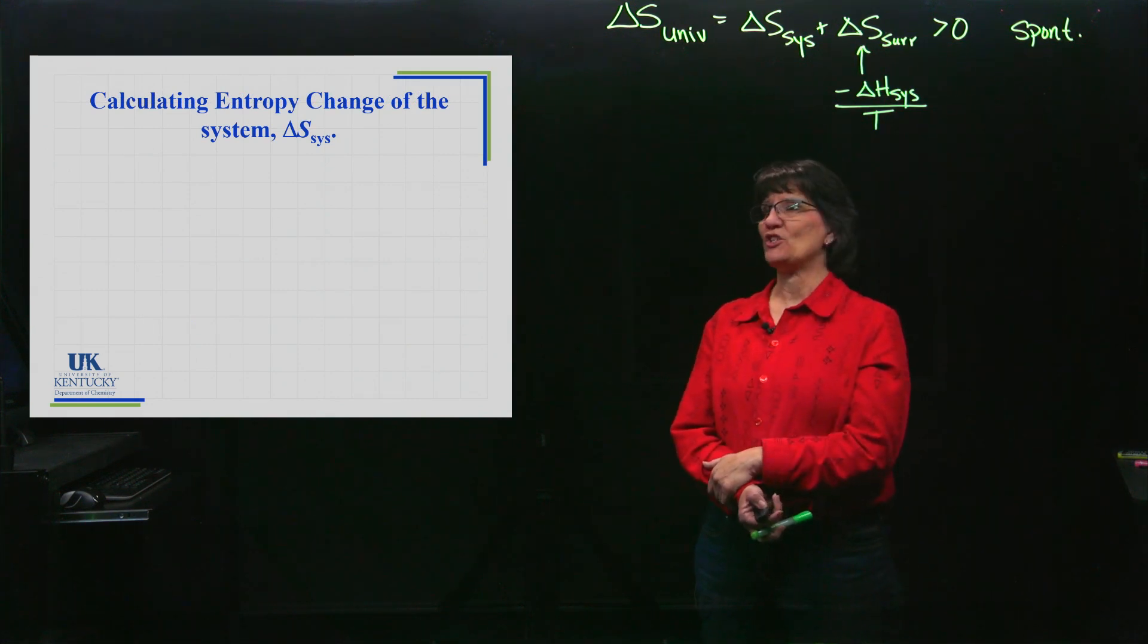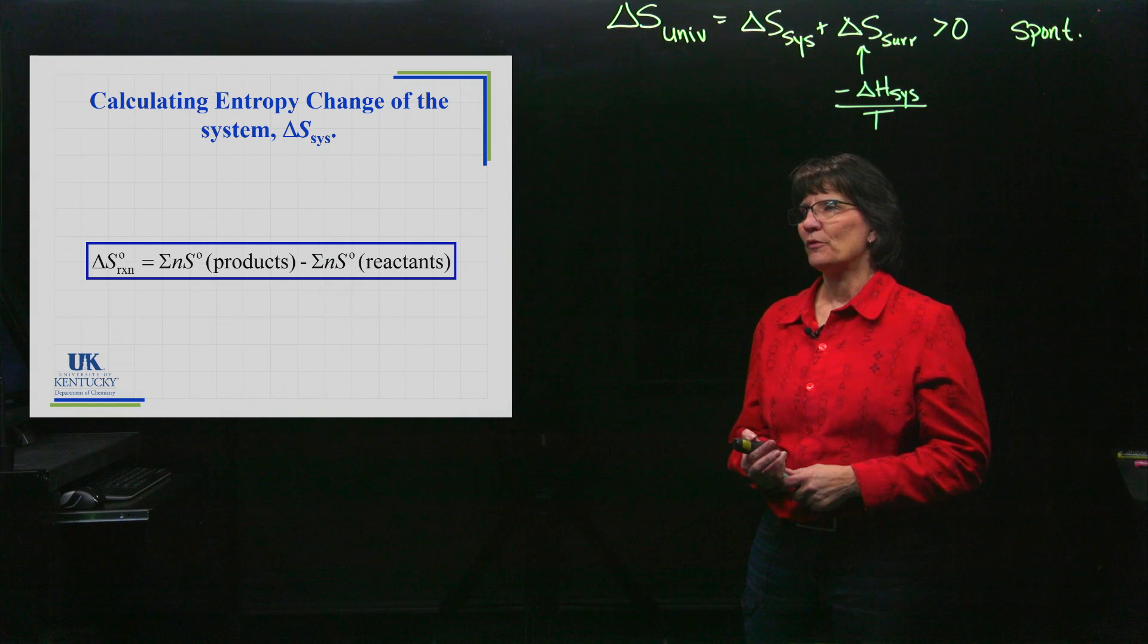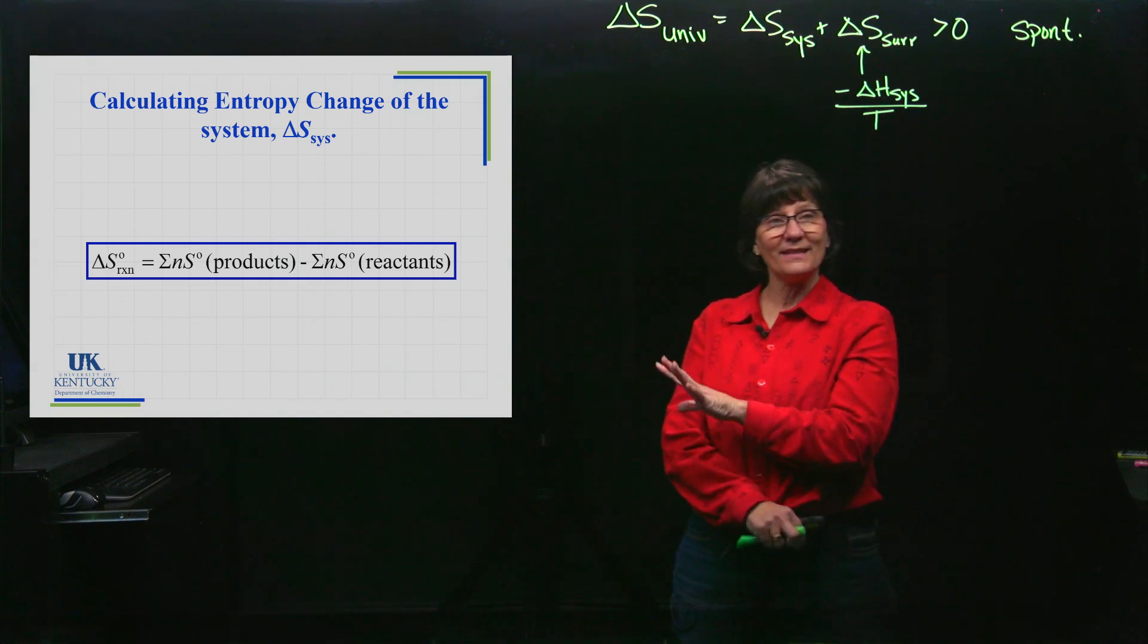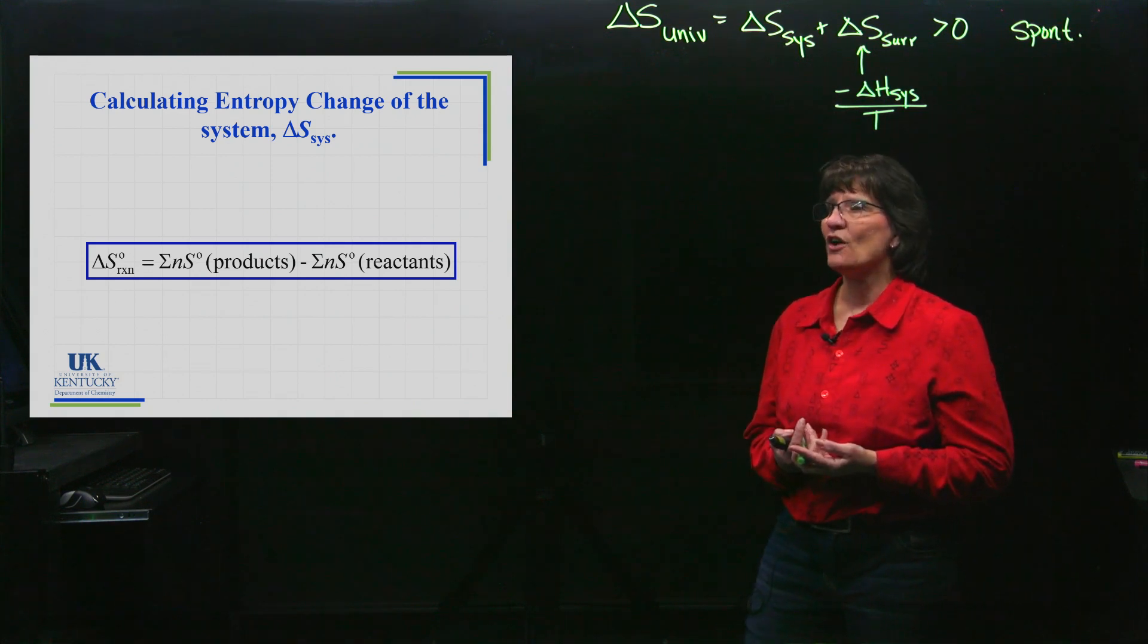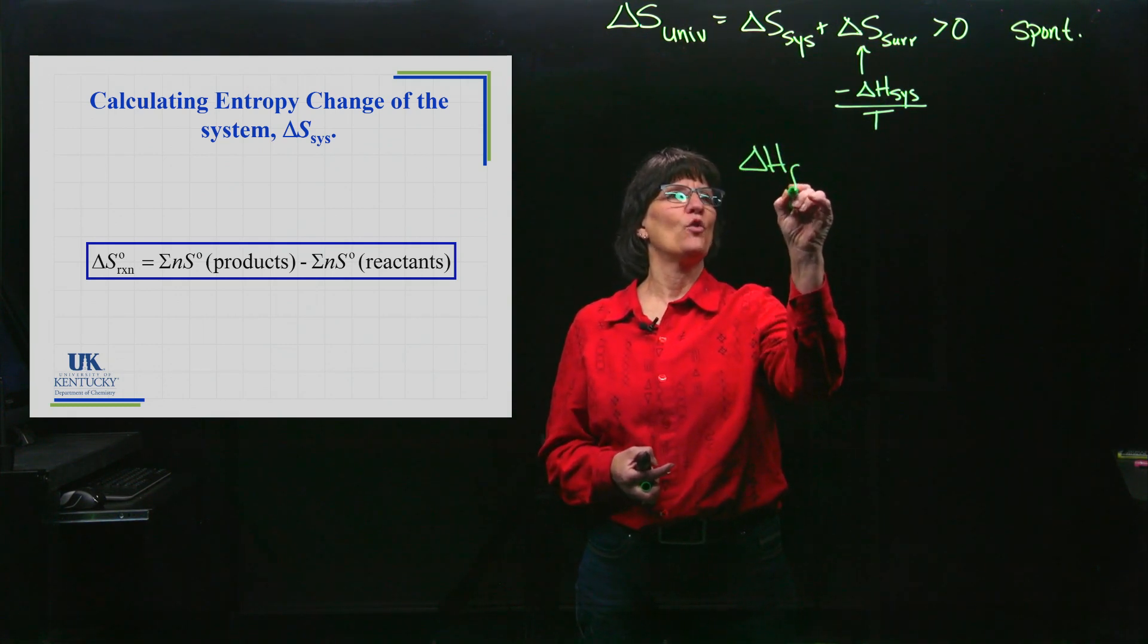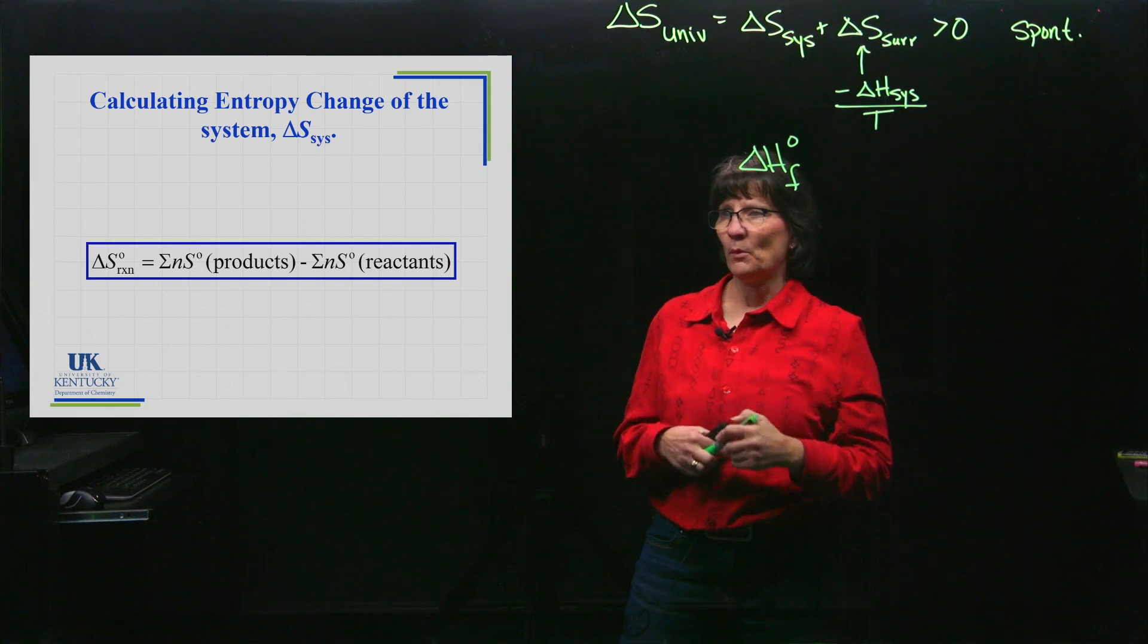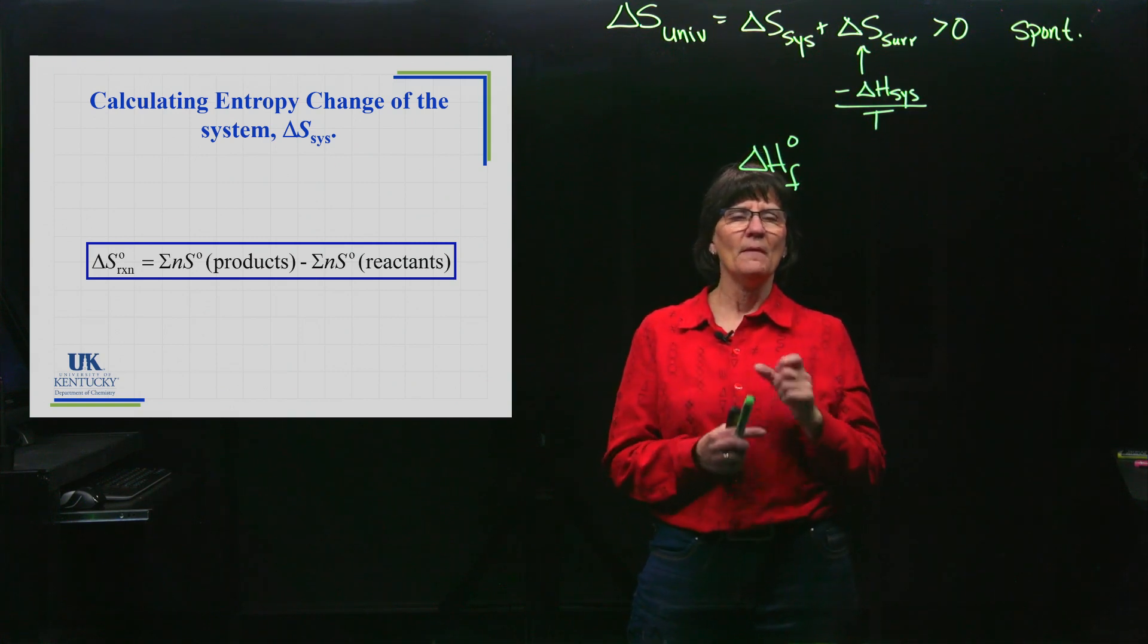Entropy is always positive. It's got no entropy if you could get to absolute zero (you can't really get there, but if you could), that would be no entropy, no movement, perfect crystal, and everything's positive from there. How do we use that information to get the ΔS for the reaction, which is our system? This equation looks very similar to one we saw with ΔH. With ΔH, we had the ΔH of the products minus the ΔH of the reactants.